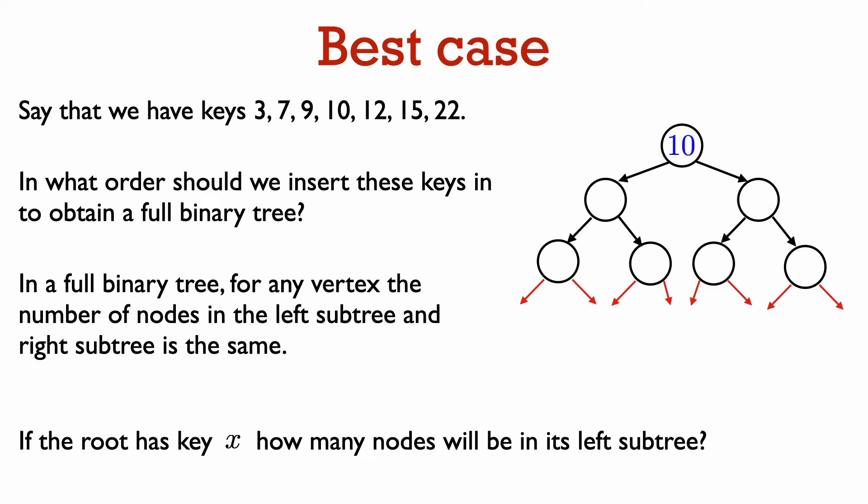There are three keys less than 10 in our set, and three keys greater than 10. Exactly what we want for the three nodes in the left subtree of the root and the three nodes in the right subtree of the root.